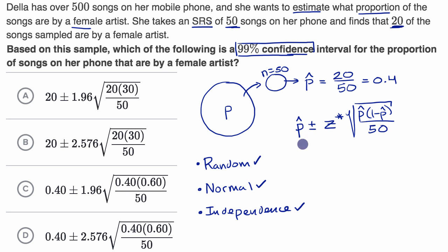We're gonna get p hat, our sample proportion, is 0.4 plus or minus, I'll save the z star here, our critical value for a little bit. So we're gonna have 0.4 times one minus 0.4, which is times 0.6, all of that over 50. We can already look at some choices that look interesting here.